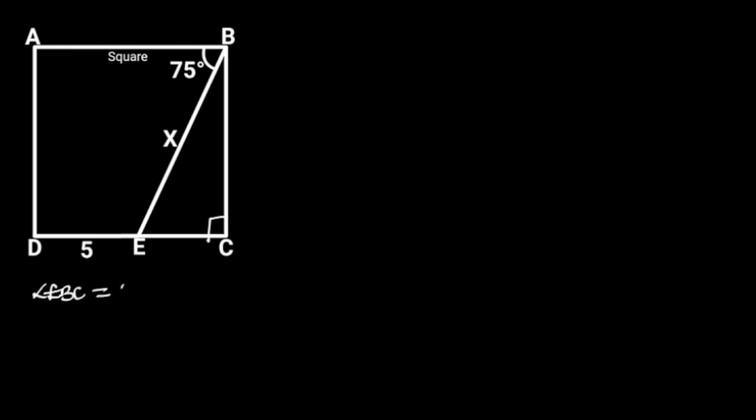To solve this problem, first let's focus on triangle BCE. Since each interior angle of a square is 90 degrees, it follows that BCE is a right triangle, and angle EBC is 90 degrees minus 75 degrees, which is equal to 15 degrees.